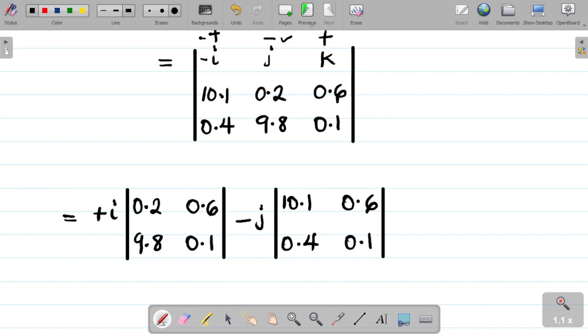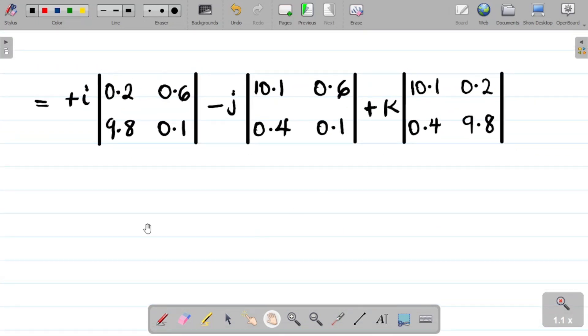I'll simply come to j, this one here. I'll cover the row of j which is this, I'll also cover the column of j which is this. So I have 10.1, that's this, 0.6, 0.4, and 0.1. I'll use that to form a 2 by 2 matrix. And that's equal to 10.1, 10.1, 0.6, 0.4, and 0.1.